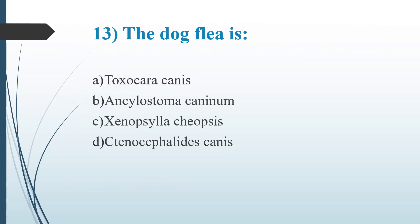Thirteenth question: The dog flea is. Option A, Toxocara canis. Option B, Ancylostoma caninum. Option C, Xenopsylla cheopsis. Option D, Ctenocephalides canis. Answer is Option D, Ctenocephalides canis. Xenopsylla cheopsis is a rat flea, which is the primary vector of bubonic plague and endemic typhus.